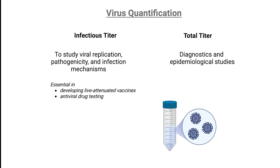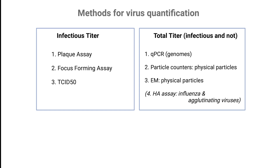On the other hand, the total virus titer is particularly important in diagnostics and epidemiological studies. In diagnostic settings, the main objective is to determine the presence or absence of a virus. For example, PCR-based diagnostics detect viral genetic material from both infectious and non-infectious particles.